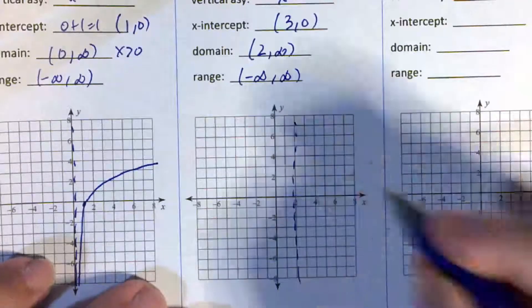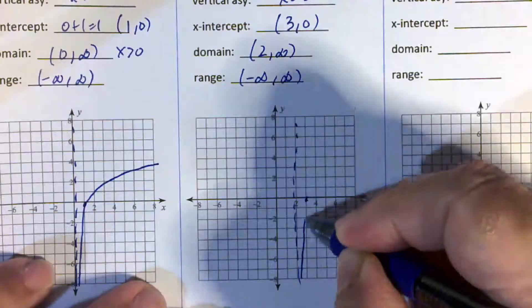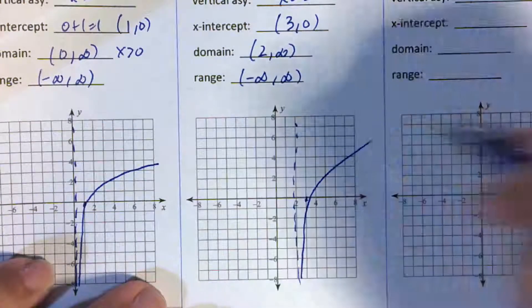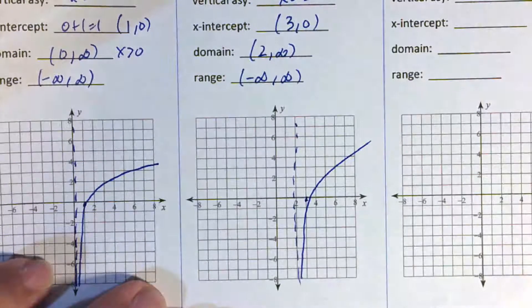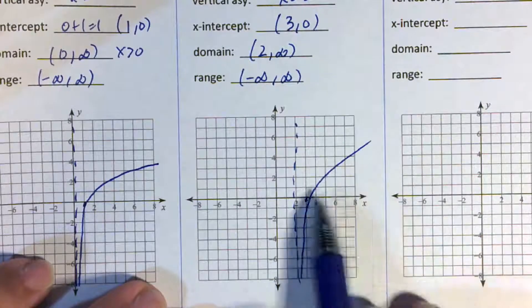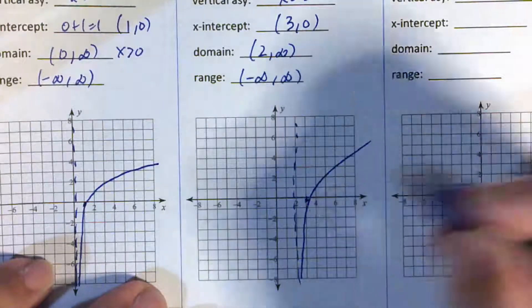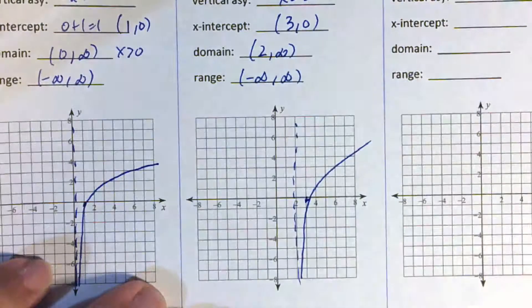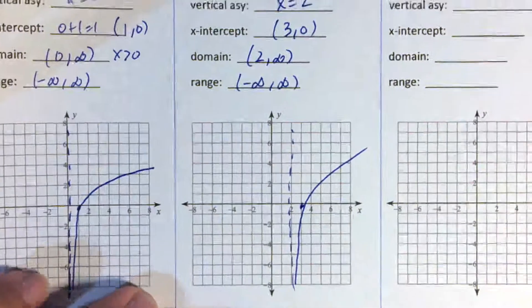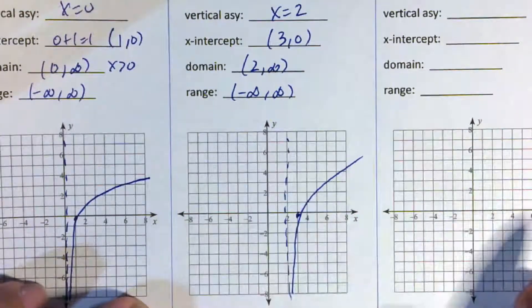We have a vertical asymptote at x equals 2 and an x-intercept at 3, so I'm just going to go up like that — it's probably a bit shallower than that, but that's okay. As long as you have a point there and I can see you tried to draw it correctly, that's good.